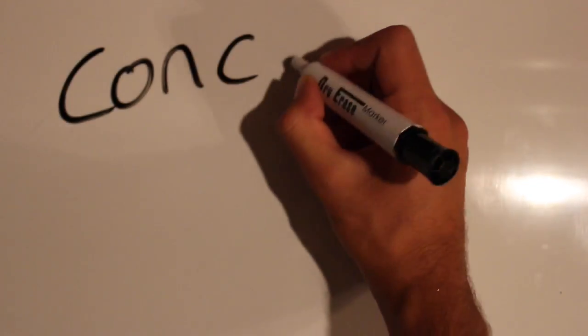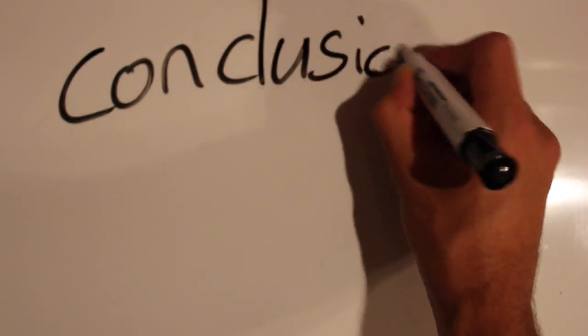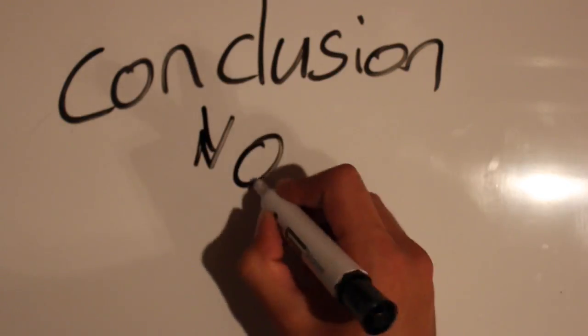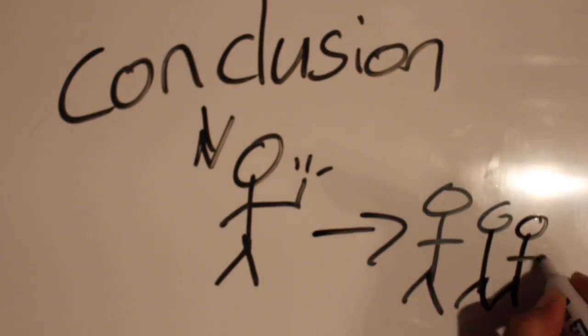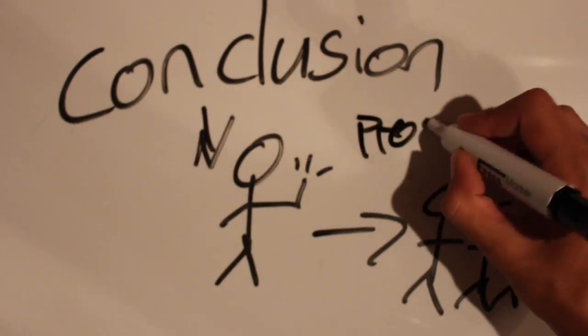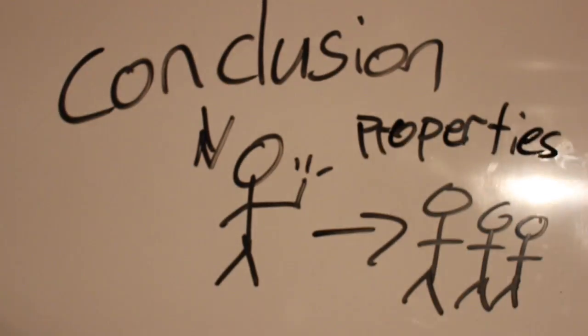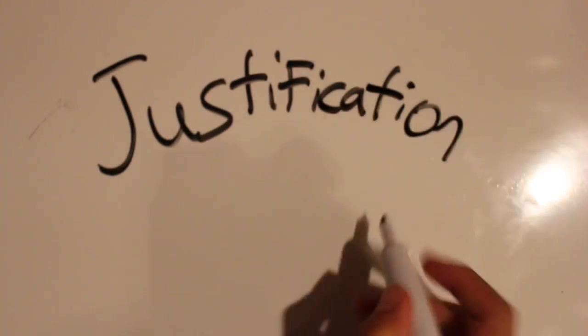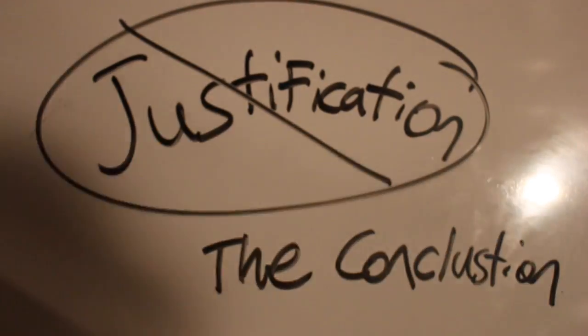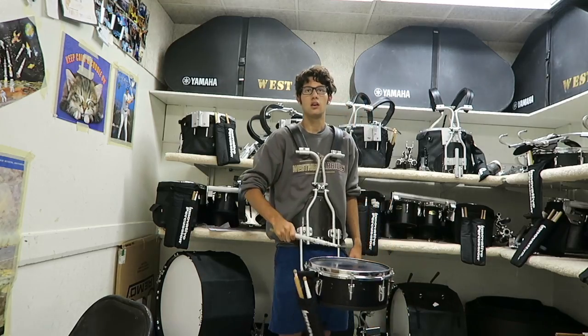The second definition: drawing a conclusion about the properties of individual members of a class or group based on the collective properties of that class or group. Basically, there is not enough justification for the conclusion. One example: